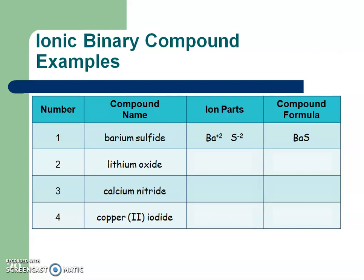For lithium hydroxide, you should find lithium as plus one and oxygen as negative two. Those charge numbers are different, so we crisscross them and get Li₂O. For calcium nitride, find calcium and the nitride ion on your periodic table. Those are also different charge numbers, so we crisscross them and get Ca₃N₂.